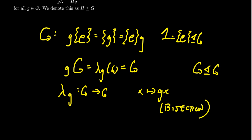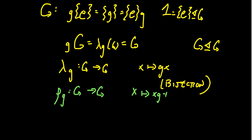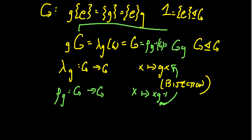We also introduced previously the map rho_g, which was right translation from G to G, where x maps over to x times g inverse. We take inverses on the right-hand side so that the composition works out correctly. This function is a bijection as well. So if we take capital G times little g, this is the same as rho_{g inverse} applied to G, and since rho_{g inverse} is a bijection, its image will be the whole thing — so this equals G as well. The left coset of G equals the right coset of G. When it comes to the cosets of G, the only coset is G itself.